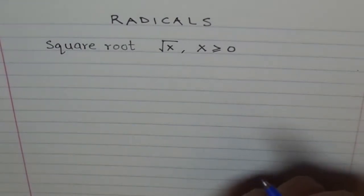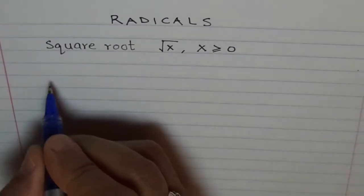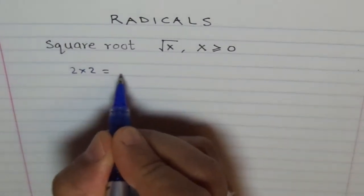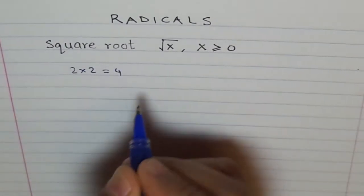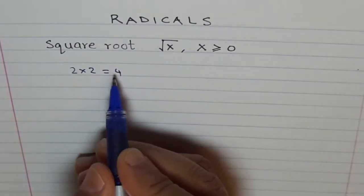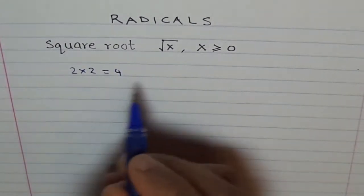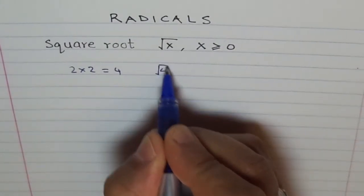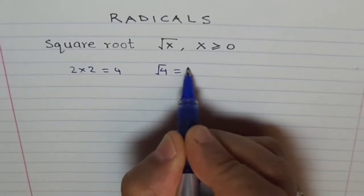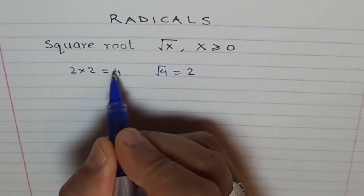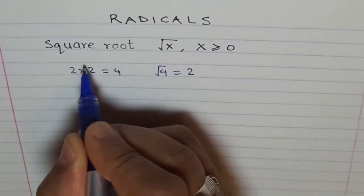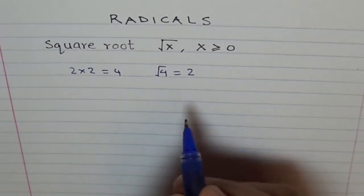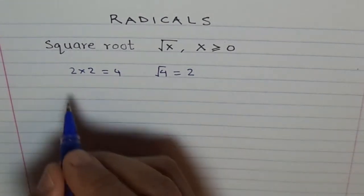We know the square of a number — if I do 2 times 2, you get 4. Square root gives the reverse thing. Square root is written like this: square root of 4 is equal to 2. When we have to get the reverse, we use square root. That is how it has been defined.